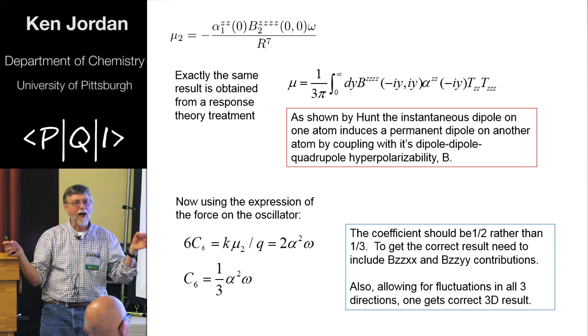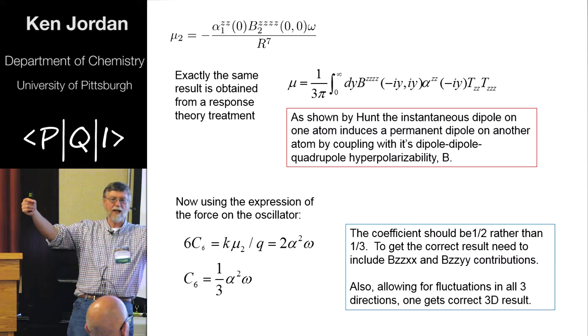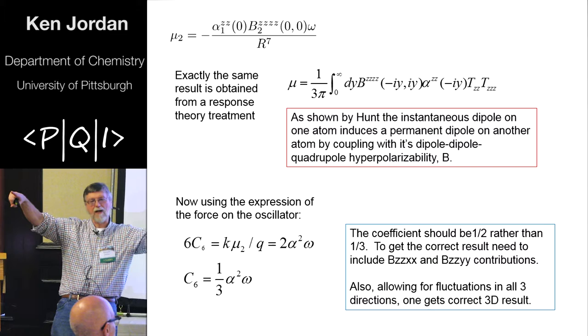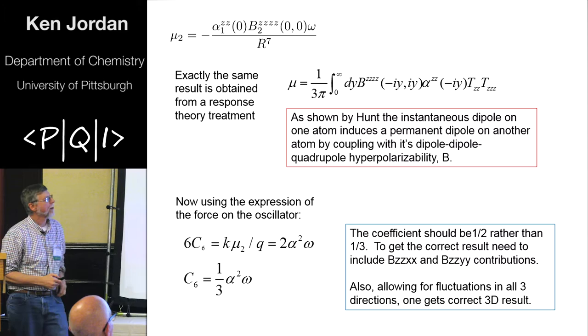And the other thing I should point out that maybe is surprising the very first time you see it, if here are the two atoms along the Z-axis, a fluctuation of the dipole in the Z-axis contributes to the permanent dipole on the Z-axis on the other atom.